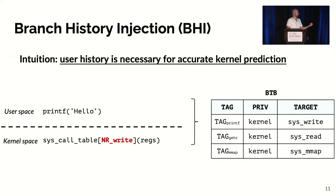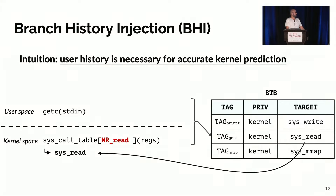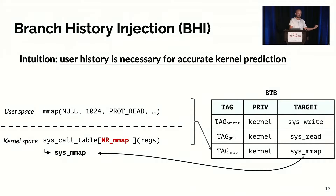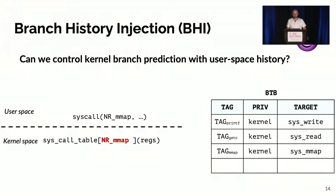Our intuition was exactly this: we need to use user-space history to perform proper predictions. So for a printf you would speculate to syscall write, for a getchar to syscall read, and for mmap to mmap. From an attacker's perspective, the question then becomes: can we control kernel branch prediction with user-space history?